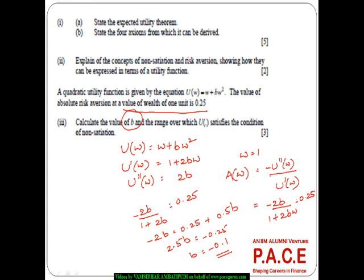The range over which the U satisfies the condition of non-satiation. If the non-satiation has to work, then it is 1 plus 2BW should be greater than 0. Now B we have already got it as minus 0.1. So 1 minus 0.2W is greater than 0.2W or W should be less than 1 by 0.2, which is 5.